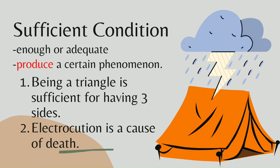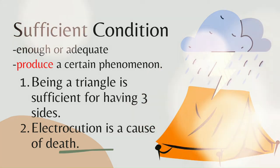Electrocution is enough to cause a person to die. But we know there are many other ways to cause death — such as poisoning, drowning, and shooting. In sufficient condition, it produces a certain phenomenon. For example, electrocution is the cause of death; therefore, death is produced by electrocution.